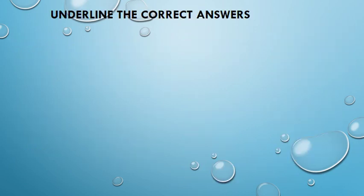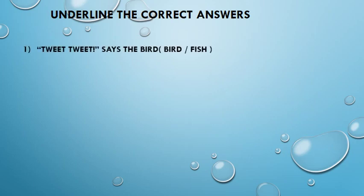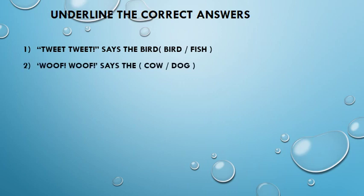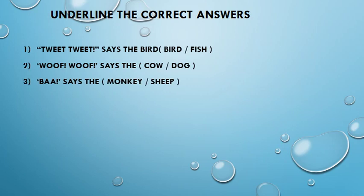Now here are some exercises for you which you can do at home. Underline the correct answers. Number 1: Tweet, tweet, says the bird. You have to underline the right answer. Number 2: Hoof, hoof, says the cow or dog. Number 3: Bah, says the monkey or sheep.